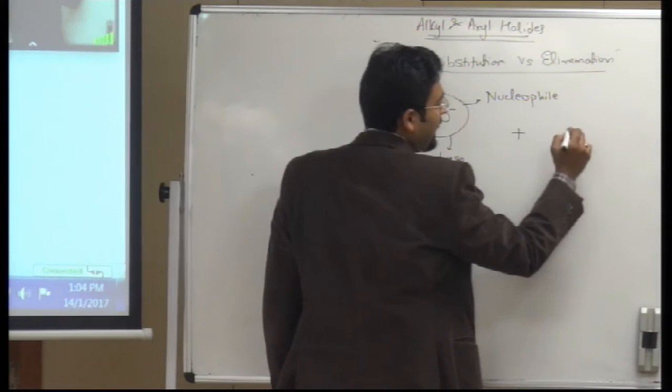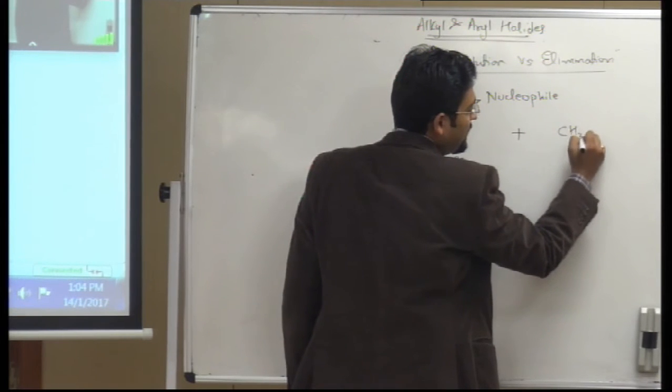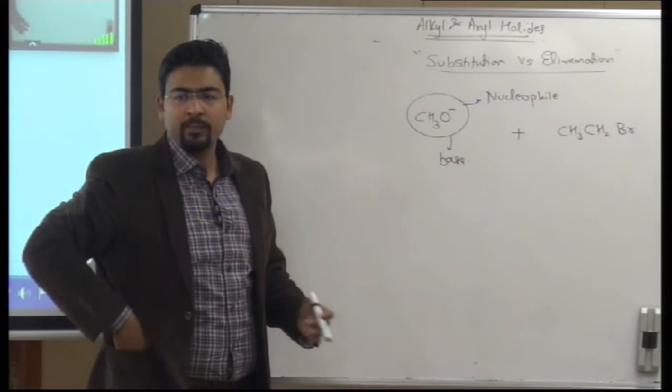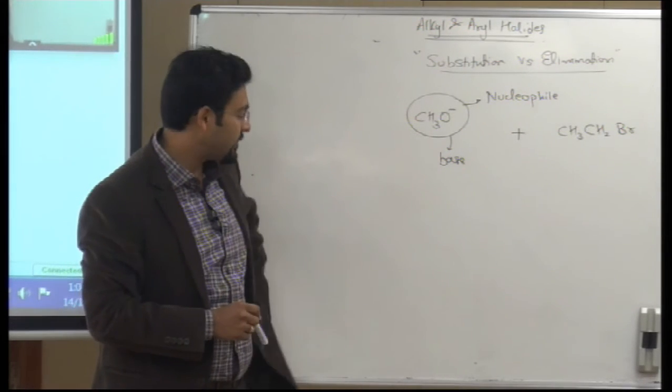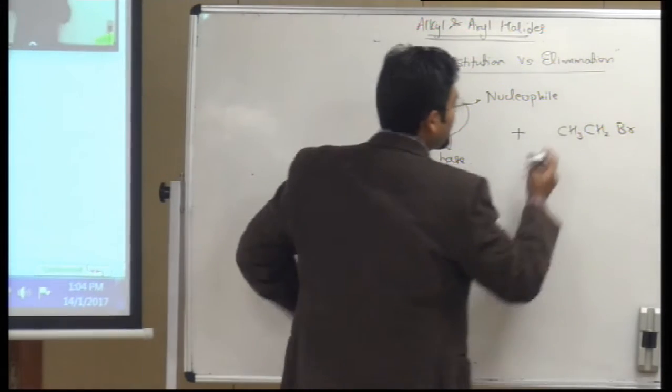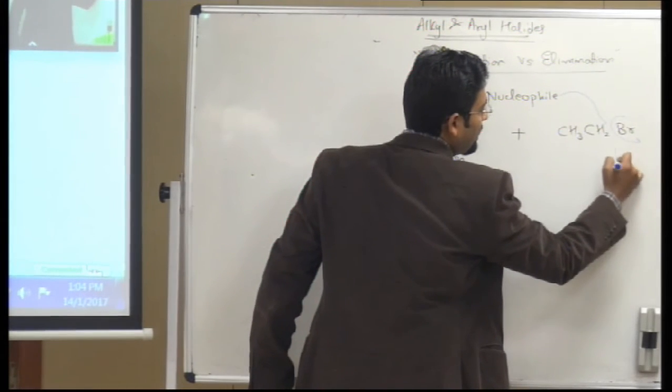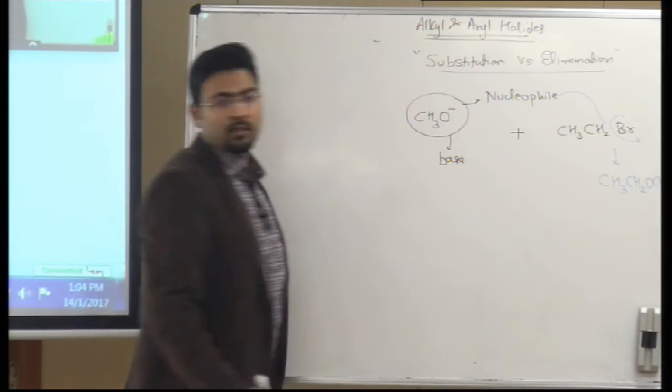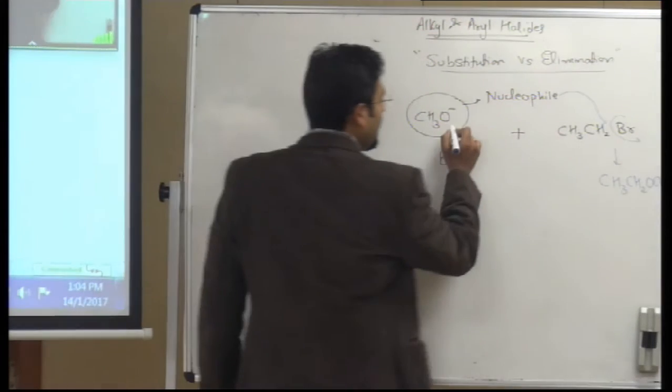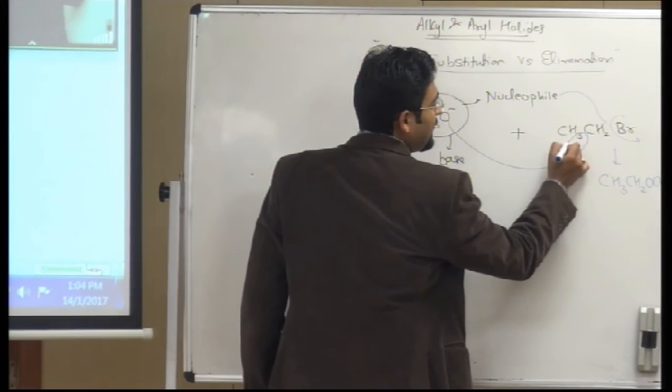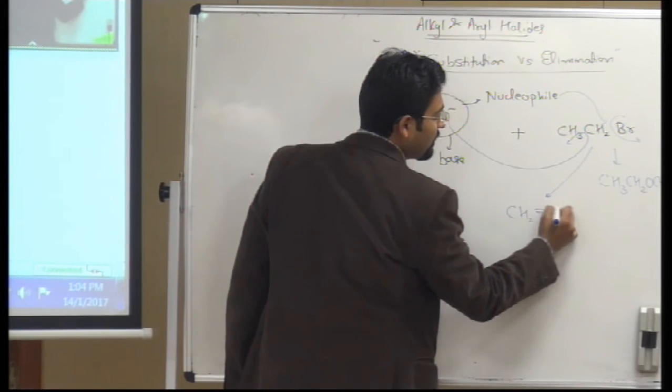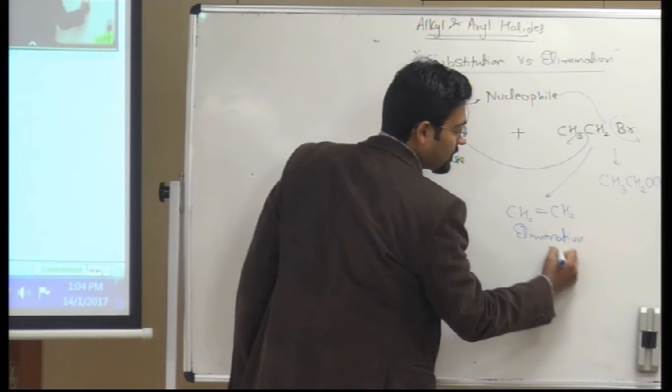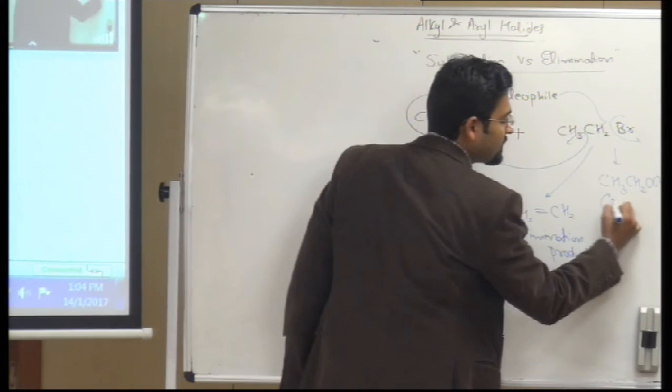For example, it is reacting with CH3CH2Br, okay? So, this compound reacts. In its reaction, if it functions as a nucleophile, so it will go and attack on this carbon, bromine will come out and it will result in the formation of CH3CH2OCH3, right? Methoxythane. In the other case, it will extract hydrogen, bromine will come out and it will lead to the formation of alkene. So, this is the elimination product and this is the substitution product.